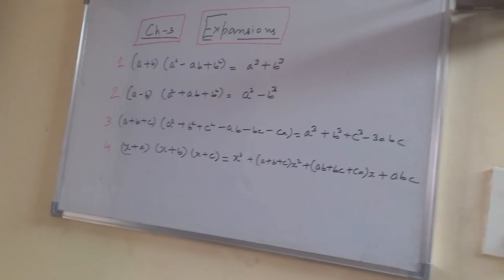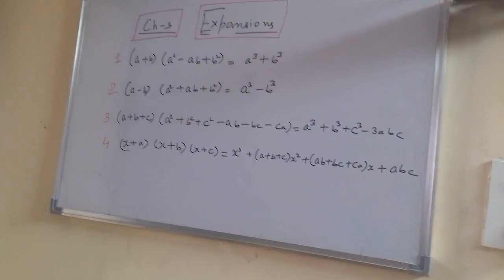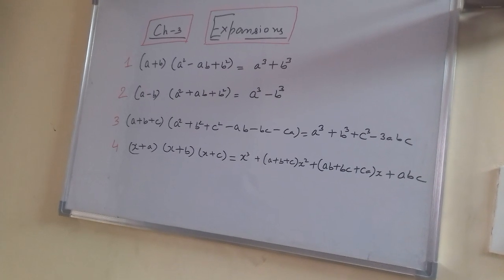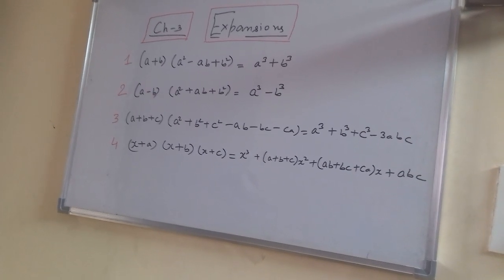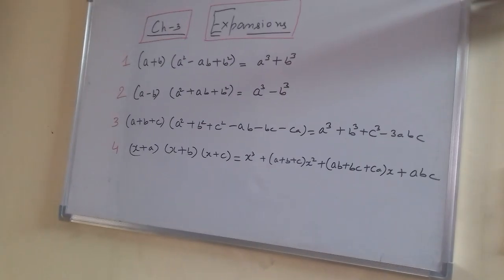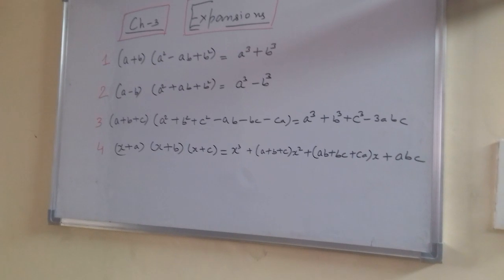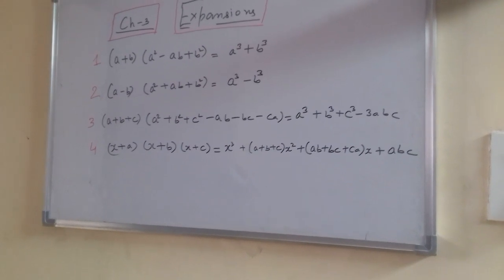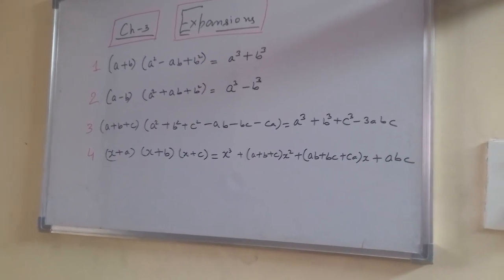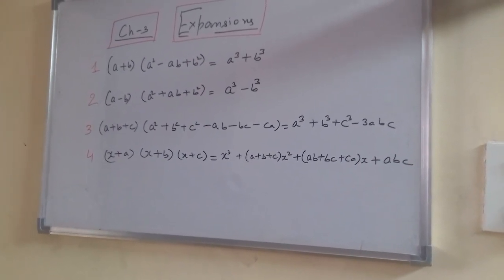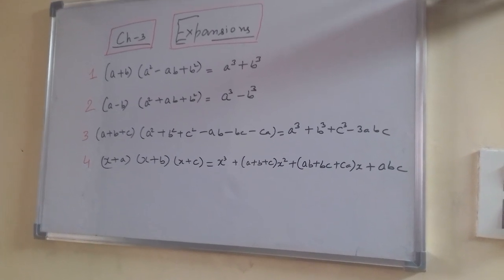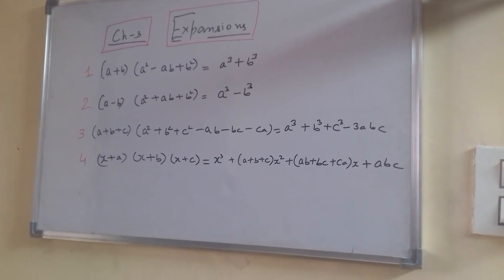The third formula is: (a + b + c) multiplied by (a² + b² + c² - ab - bc - ca) is equal to a³ + b³ + c³ - 3abc.